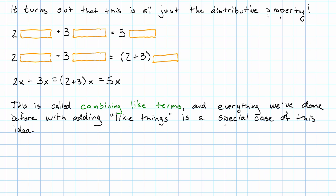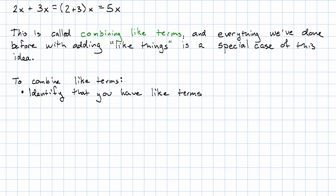So how do we do this? Well, first we make sure that we really do have like terms. And then, once we identify that we do have like terms, we add the coefficients and leave the variable part alone. 5y squared plus negative 3y squared is 2y squared. Add the coefficients, 5 plus negative 3. Leave the variable part alone.